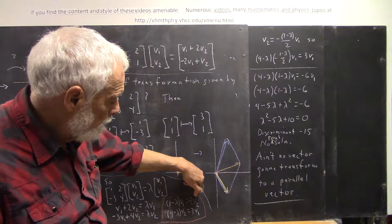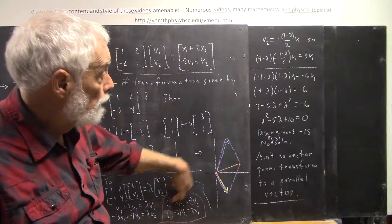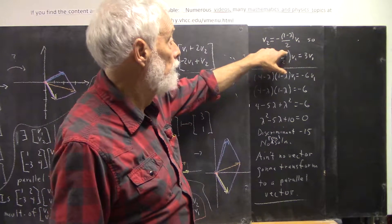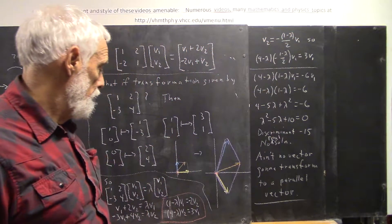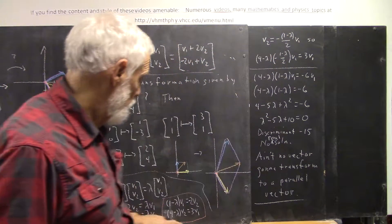So, solving, we multiply by negative 1 half, so we get v2 equals negative 1 minus lambda over 2 times v1.